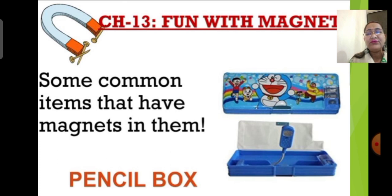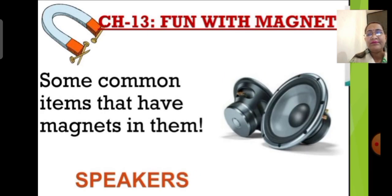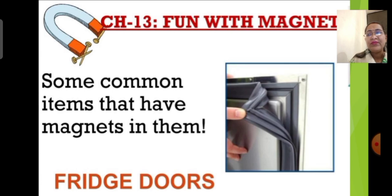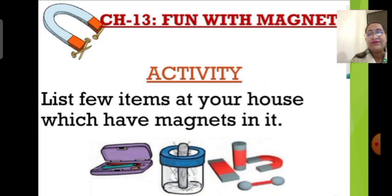Some pencil boxes have a lid that fits tightly when closed even without a locking arrangement — that is because a magnet holds the lid and does not allow it to open unintentionally. Also, speakers and buffers in sound systems work with the help of a magnetic system built within them. The fridge door stays tightly sealed, not letting cooling escape, because of a magnetic gasket along the edges — yet it can be freely opened against the magnetic field.